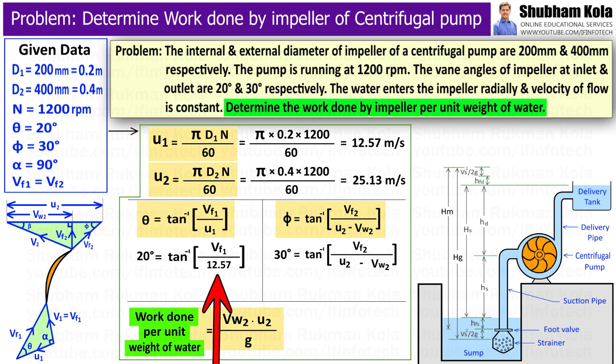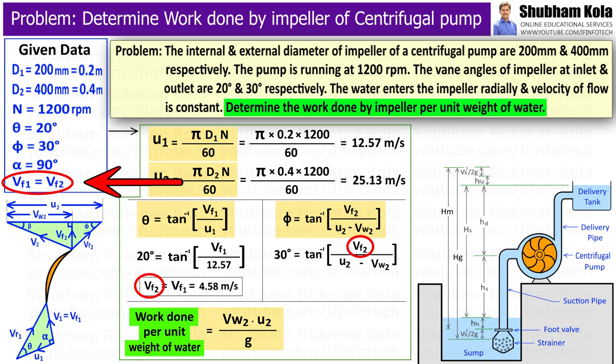So here, I will substitute the value of U1 in order to calculate Vf1. So Vf1 we got as 4.58 m per second, which is also equal to Vf2 because velocity of flow is constant at inlet and outlet.